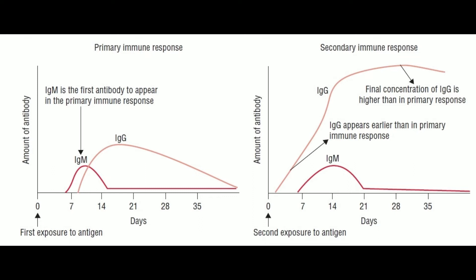Characteristic #4 - Antibody Peak: In the primary immune response, the antibody level reaches its peak in 7-10 days. In the secondary immune response, the antibody level reaches its peak in 3-5 days.